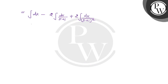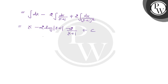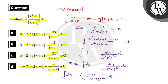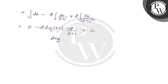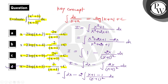Now solving each integral: ∫dx = x; minus 2 times ∫dx/(x+1) = −2 log|x+1|; and for 2∫(x+1)^(−2) dx, using the power rule we get (x+1)^(−2+1)/(−2+1) = −2 times (x+1)^(−1)/(x+1). So the final answer is x − 2 log|x+1| − 2/(x+1) + c. Therefore, option D is the correct answer.